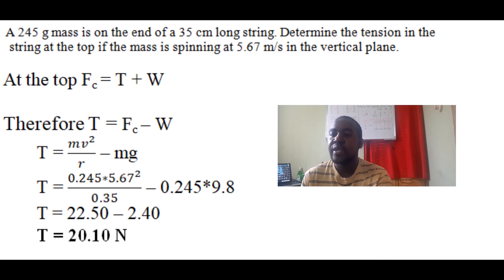Our centripetal force is 22.50 and our weight is 2.40. When we subtract, we get tension to be 20.10 N. That's the tension from the string at its top position. Just for note, at the bottom, the tension will increase because now tension acts against both centripetal force and the weight of the object.